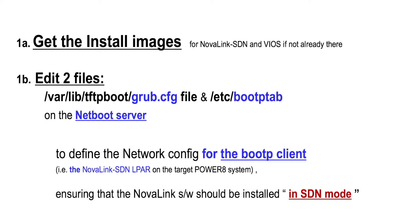Step 1b: we edit two files, namely grub.cfg and bootp table, in order to define the network configuration for the bootp client, which is the NovaLink SDN LPAR on the Power8 system.